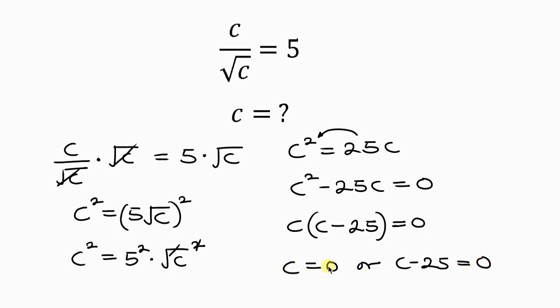Now here we have a value for C, but we don't know if it is correct yet unless after checking. Now to get the second value of C, we just have to move negative 25 to the right. And when we do that, C becomes, as negative 25 crosses to the right, it becomes positive 25.